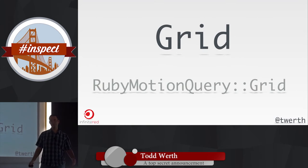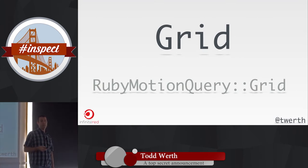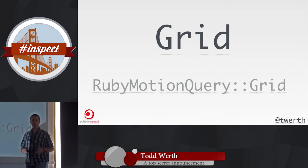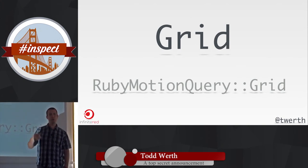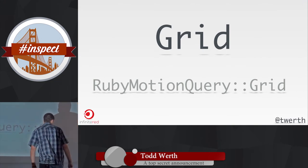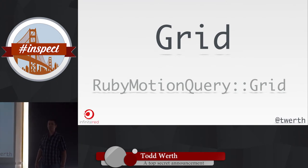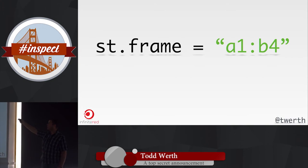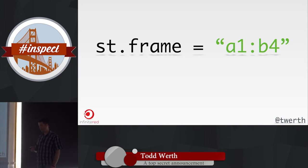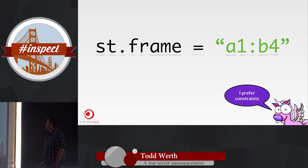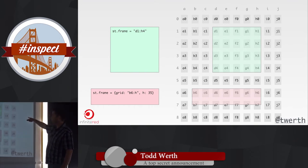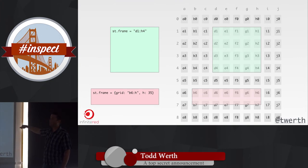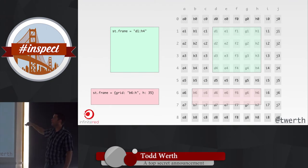When I do layouts of screens I mostly use a grid — usually a designer created the app with a grid. What I typically do is make a hash, do the rows and columns, and manually do it because there was no system for it. So I thought it would be cool in RubyMotionQuery to have a grid system that was a lot easier. This is how you set your frame using Excel-like syntax — for example, 'a1 to b4' does top left to bottom right with that one little string.